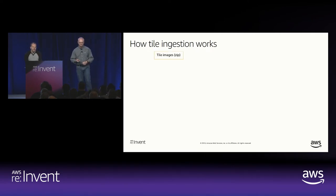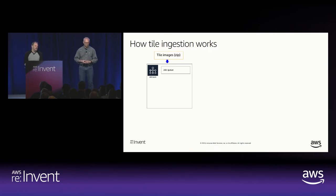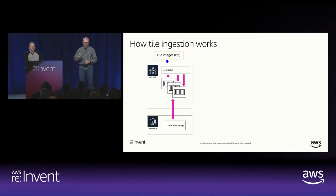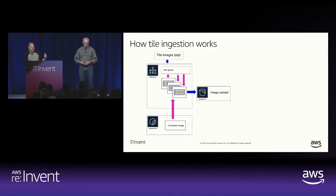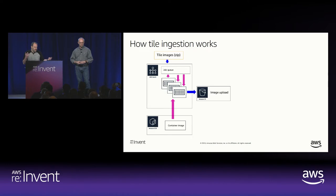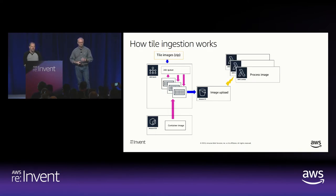For tile ingestion, we take a zip file in and use AWS Batch to process it. We add a job to a job queue, and Batch takes images from ECR and spins up containers to run those jobs. The job downloads the zip file and uploads those images to S3. This part of the process we kept simple — we couldn't really figure out how to parallelize reading from a zip file. But all the other work we want to parallelize, so for that we use Lambda.